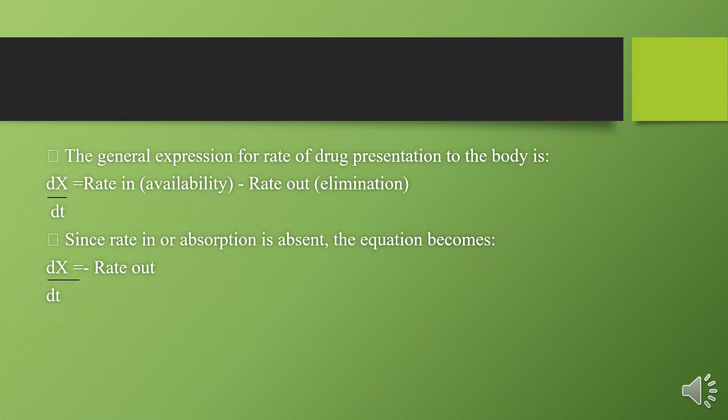Therefore, we are not considering the rate of absorption; we are only considering the elimination part. First we draw the block diagram, then we express the same with the help of an equation. The general expression for the rate of drug presentation to the body is dX/dt, which is equal to rate in minus rate out — how the drug is absorbed or bioavailable, minus rate out, meaning rate of elimination.